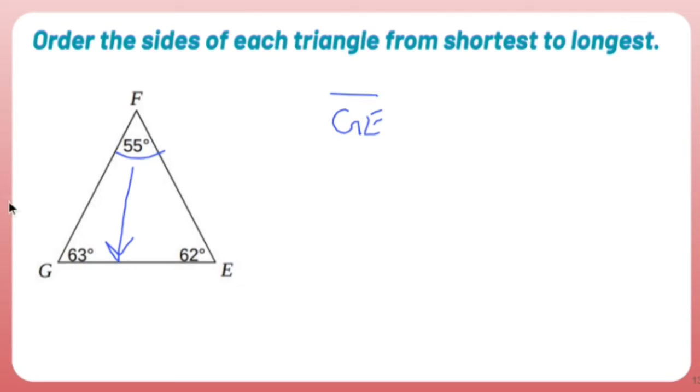So let's find the medium angle, 62, barely, but that's the medium angle. The side opposite that is side GF. So we'll say side GF for girlfriend.